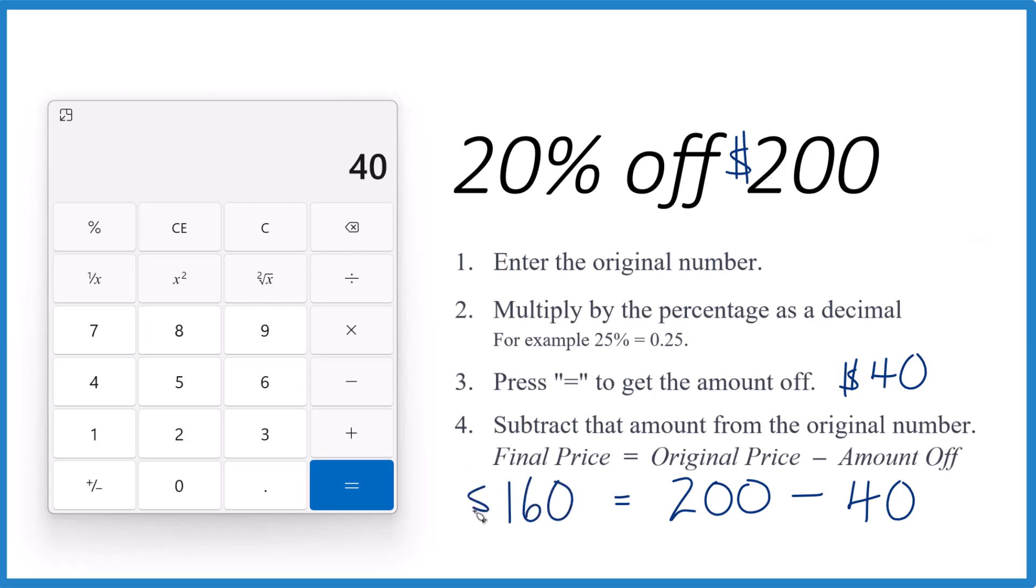So our final price, $160. We saved $40 here. That's how you take 20% off $200. We're using a calculator to do this. Thanks for watching.